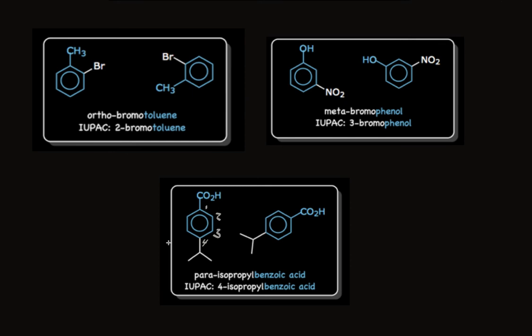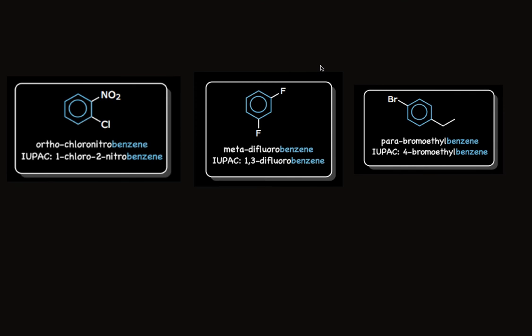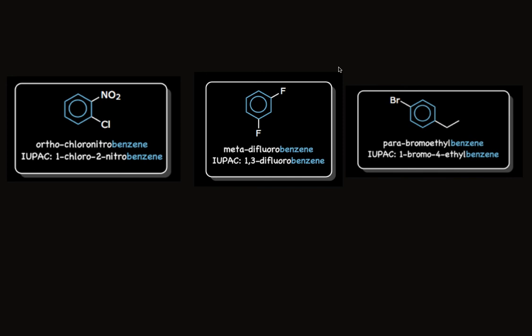Here are more examples of disubstituted compounds that don't have special names — these are all named as benzenes, with substituents listed in alphabetical order. The first is ortho-chloronitrobenzene, or systematically 1-chloro-2-nitrobenzene, with chloro given position 1 since it comes first alphabetically. The middle structure is meta-difluorobenzene, or 1,3-difluorobenzene in IUPAC. The one on the right is para-bromoethylbenzene, or 1-bromo-4-ethylbenzene in systematic nomenclature.